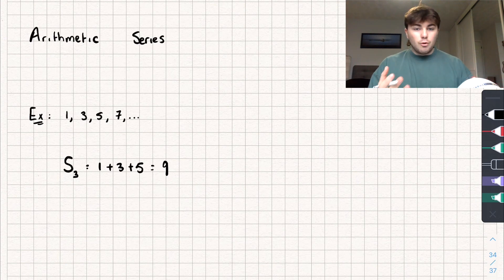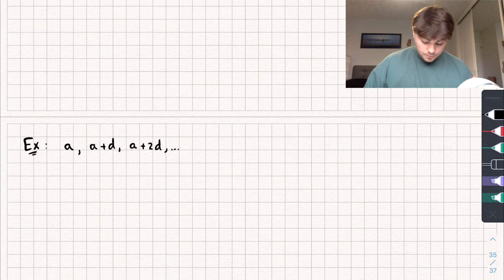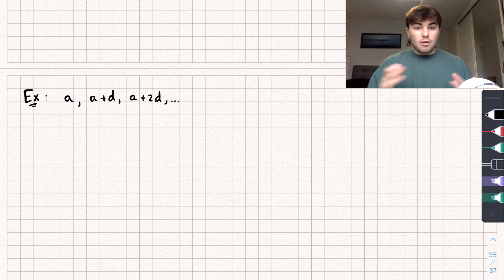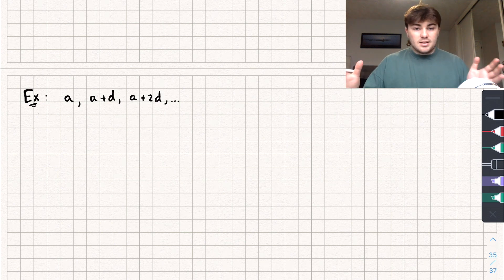And if we do this, this will give us a formula that makes it a lot easier because say I wanted to find the sum of the first 250 numbers, that's obviously going to take a long time, but we can get a really nice formula or equation that will help do it for us. So say we have the arithmetic progression, A, A plus D, A plus 2D, and so on.